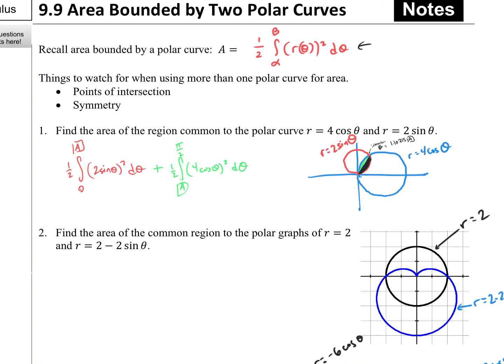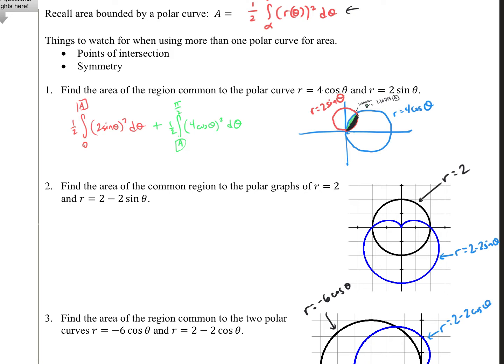Now we're going to look at the second problem. I want the area of the region common to the two graphs — that little region right in here. We need to think about how the area is swept out. First, find where the two graphs intersect so we know what angle values those happen at. Setting them equal to each other, that happens when sine equals 0, so theta would be 0 and pi. This intersects at 0 and this intersects at pi.